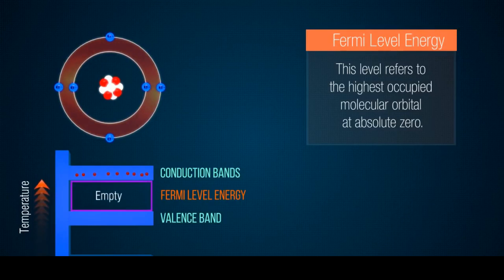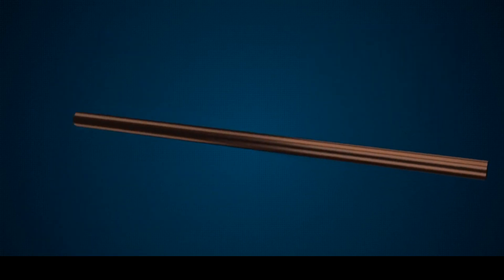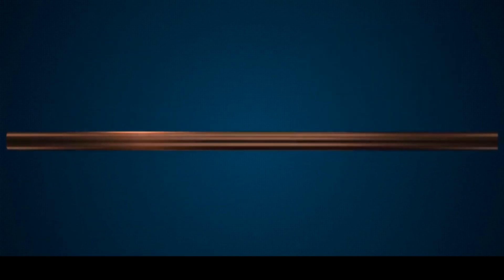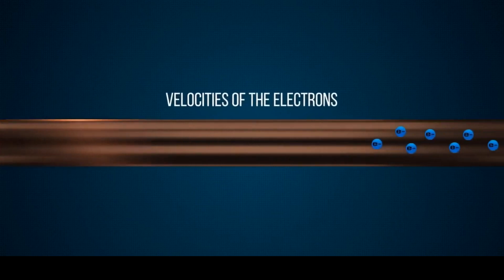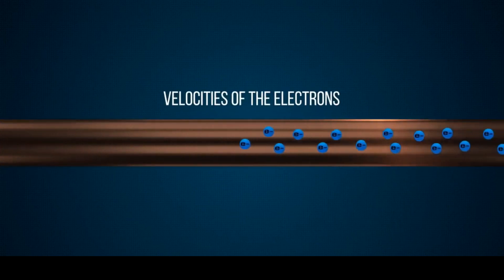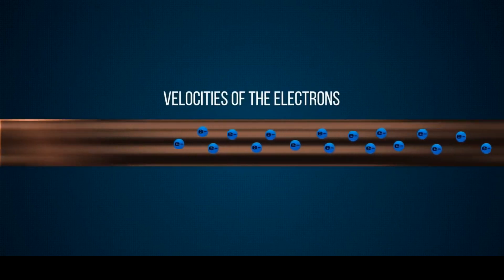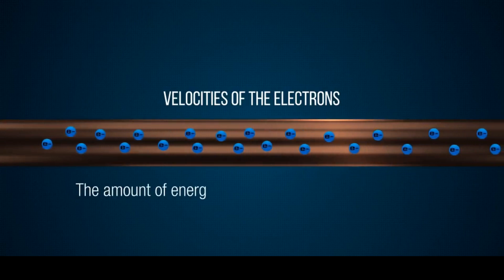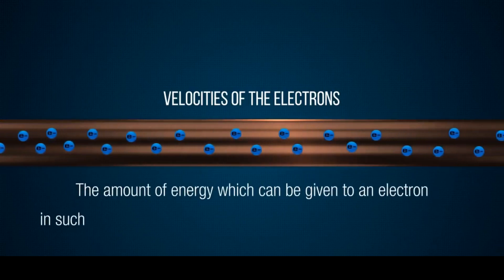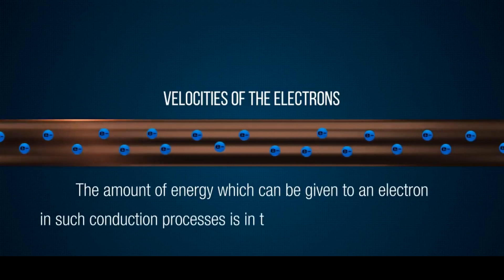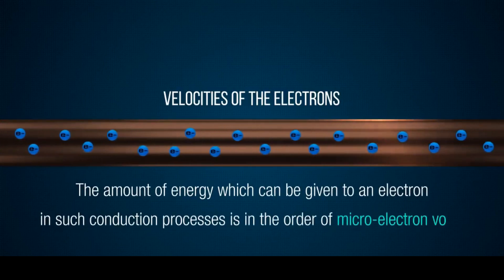In metals, the Fermi energy gives us information about the velocities of the electrons which participate in ordinary electrical conduction. The amount of energy which can be given to an electron in such conduction processes is on the order of microelectron volts.